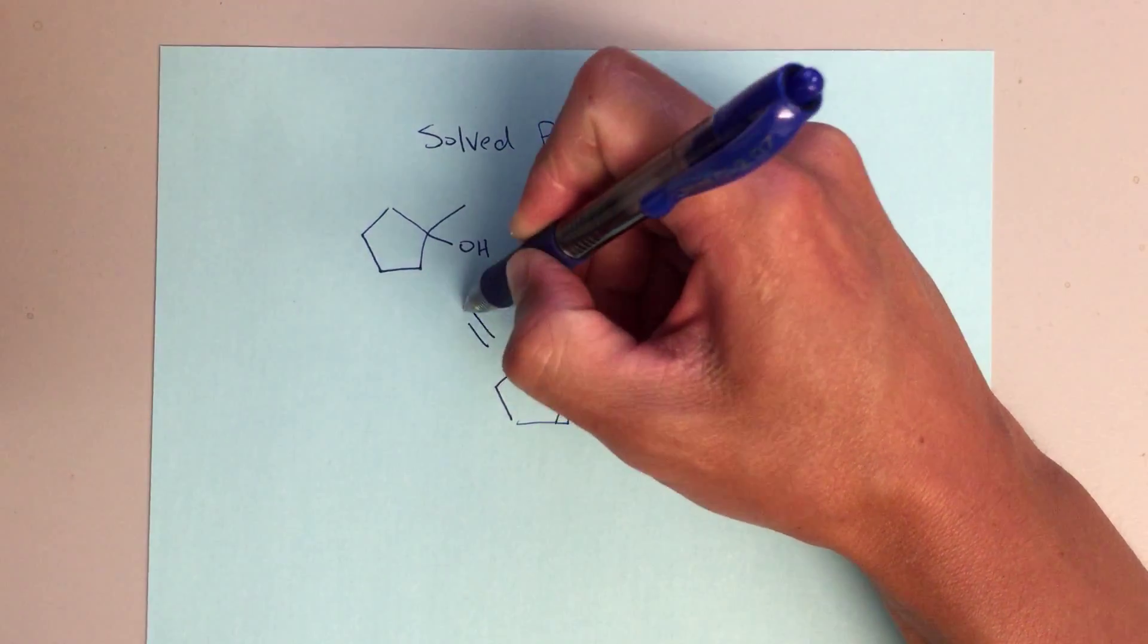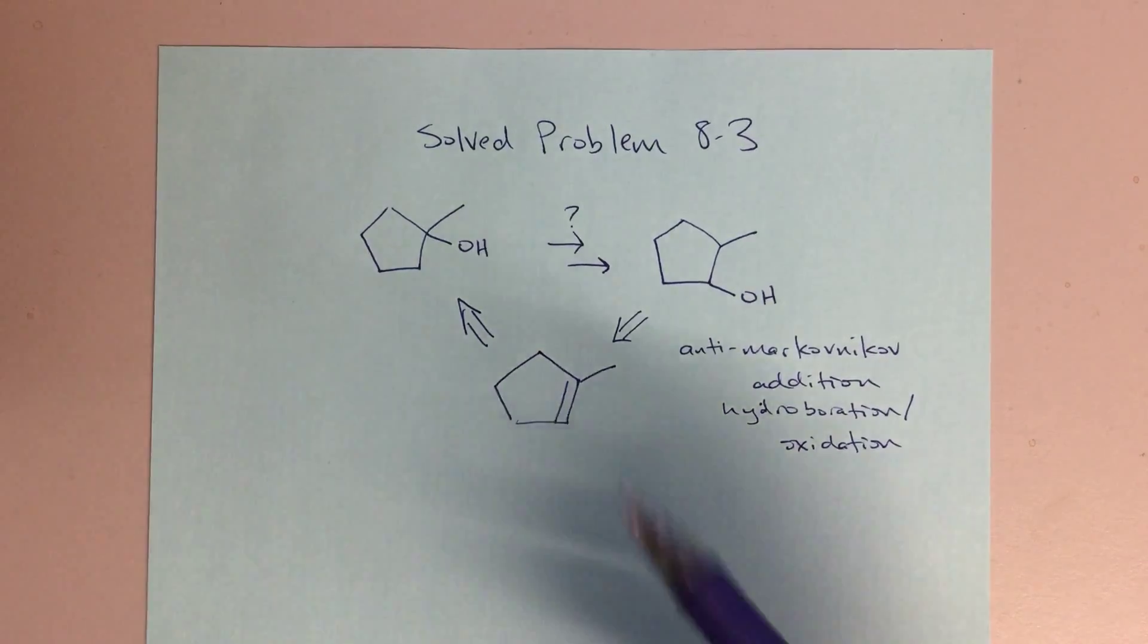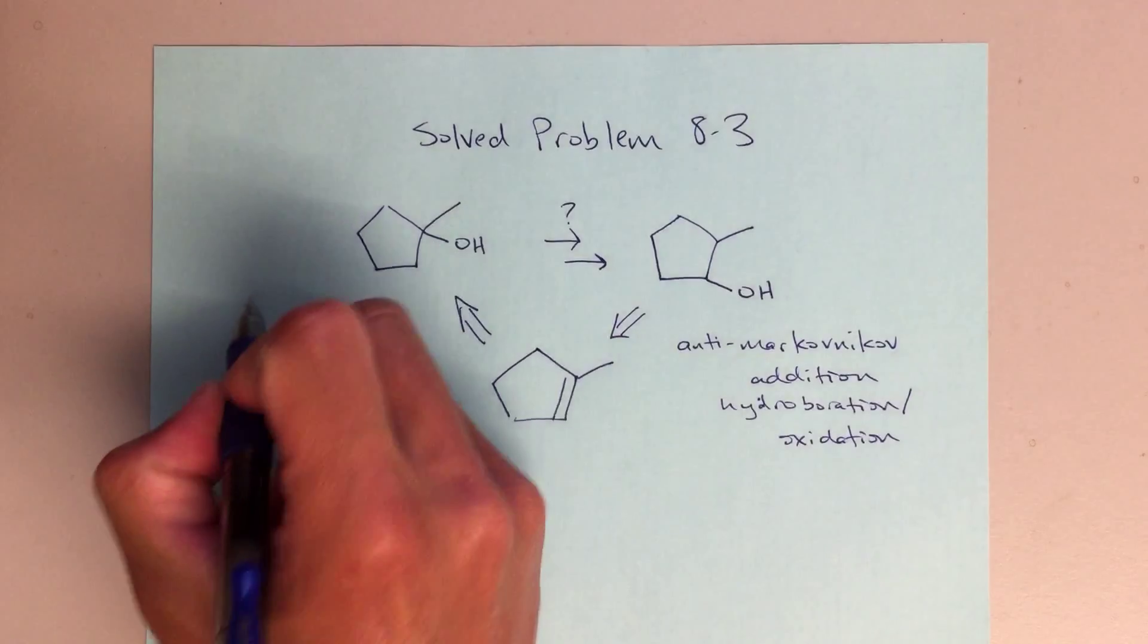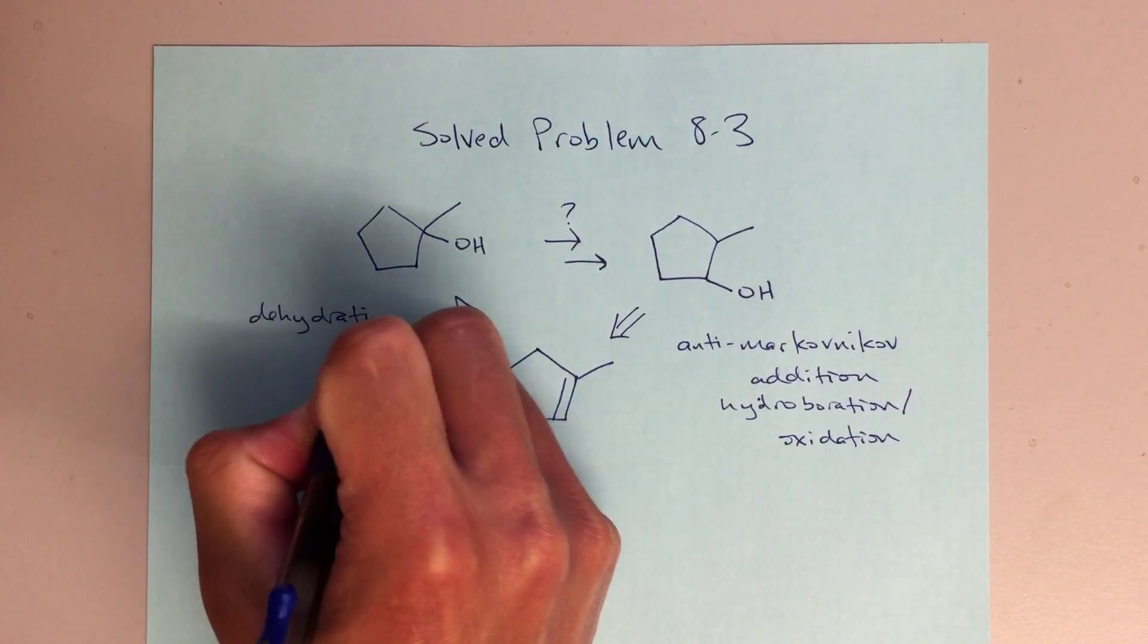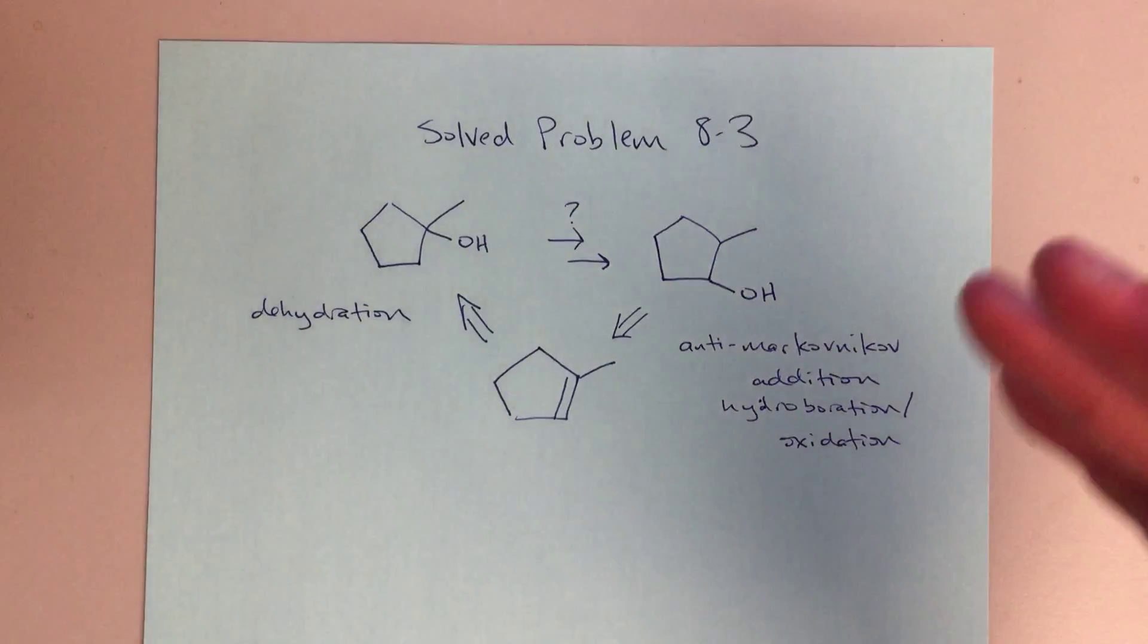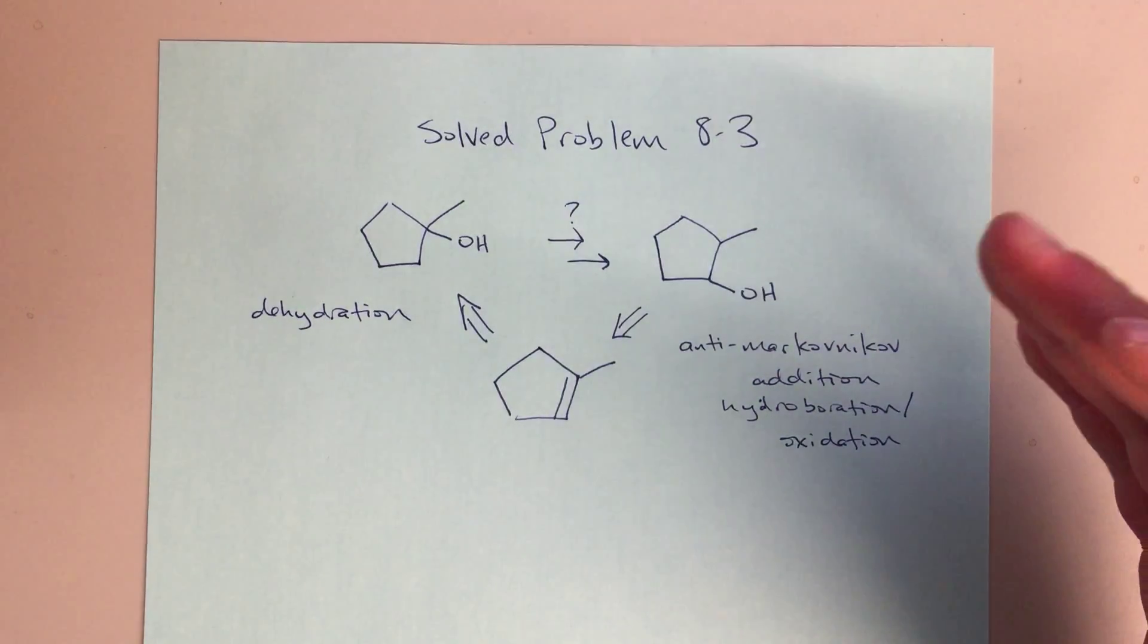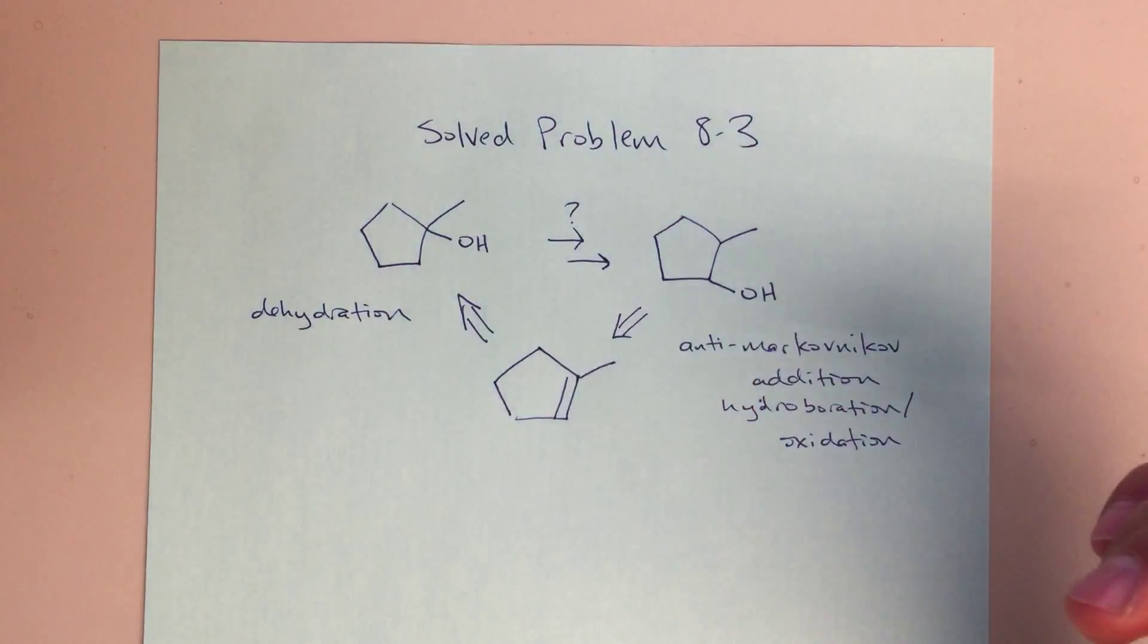Then the question just remains, how do I go from this alcohol to an alkene? That's going back to chapter 7, and this is going to be a dehydration. We've seen this a few times already. We have to break this into pieces; it's going to be too complicated to try to do everything all at once, but this is going to be my strategy.